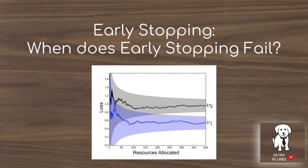Early stopping is the mechanism used to save computation, but sometimes it can fail. As shown in the picture, early on at say 30 epochs, it's unclear which function is about to perform better. The V1 function is actually a little ahead of V2 at that moment, so if you early stop there, you would conclude that V2 is better than V1. But if you train all the way to convergence, you would eventually find out that V1 is better than V2.